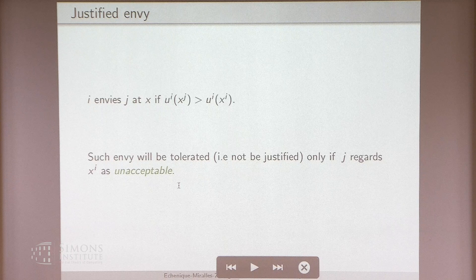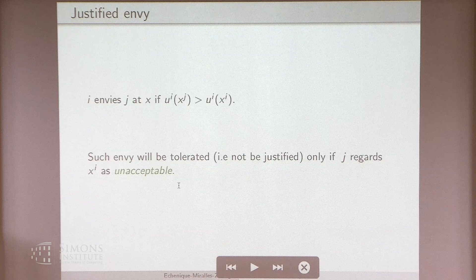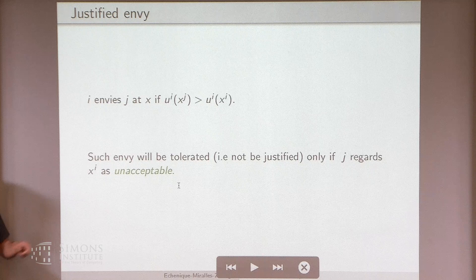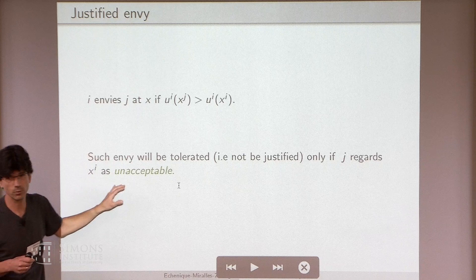Think of the swap between i and j as a remedy to envy — certain remedies are not viable, specifically the ones that involve violating j's property rights. You might ask why we only consider pairwise swaps as remedies. They're natural — it's the kind of idea in the school choice literature when you talk about justified envy. But actually, the tools we use can accommodate much more general sorts of remedies, including more elaborate reassignments. If you want, at the end of the talk I can tell you more precisely.